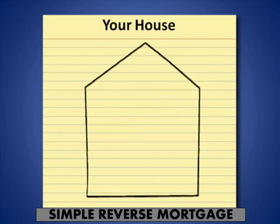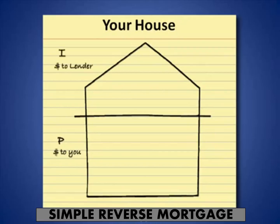I want to do a rudimentary diagram of your house. Envision this is your house — we're going to split that house into two parts. The lower part is the principal: these are dollars that you get to spend, enjoy, and utilize in any way you want. The top part of the line is the interest that would be set aside to take care of the lender.